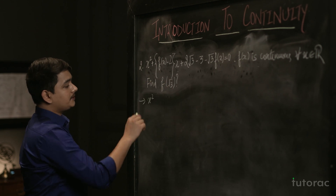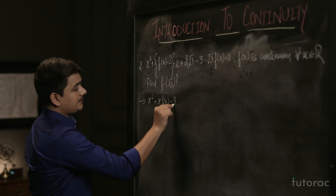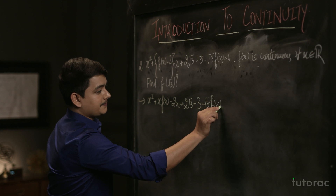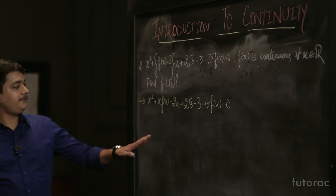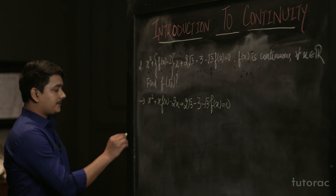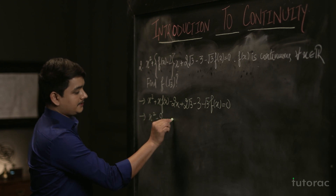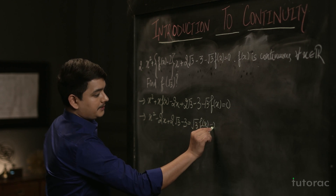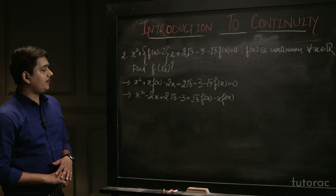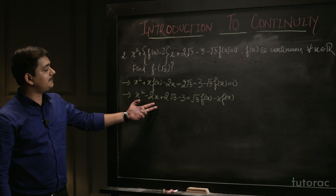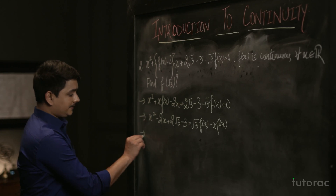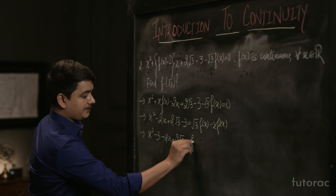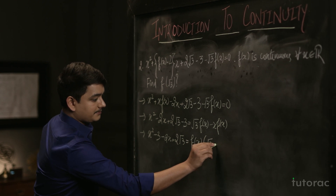Expanding the brackets: x² + x·f(x) − 2x + 2√3 − 3 − √3·f(x) = 0. Taking f(x) common from the relevant terms and rearranging the left-hand side: x² − 2x + 2√3 − 3 = √3·f(x) − x·f(x), which equals f(x)·(√3 − x).